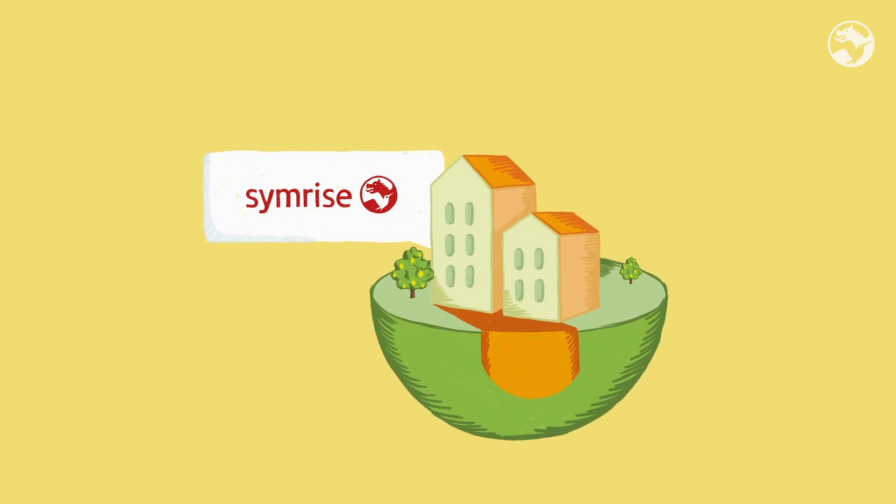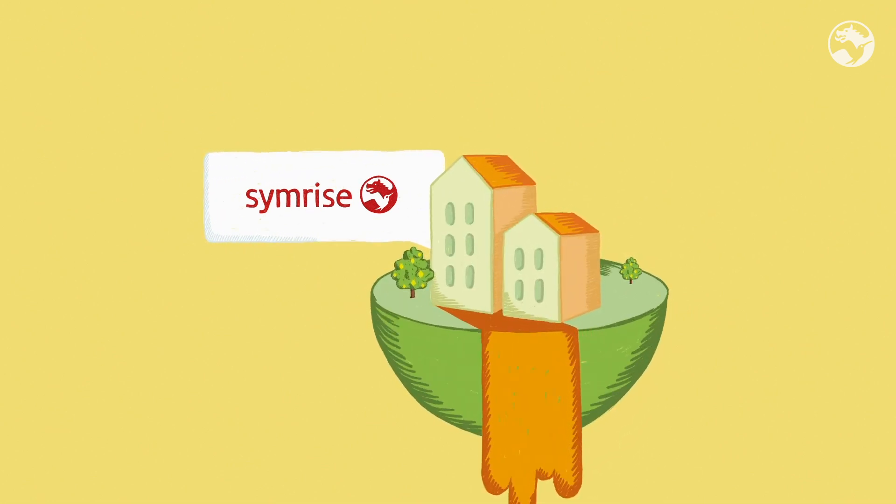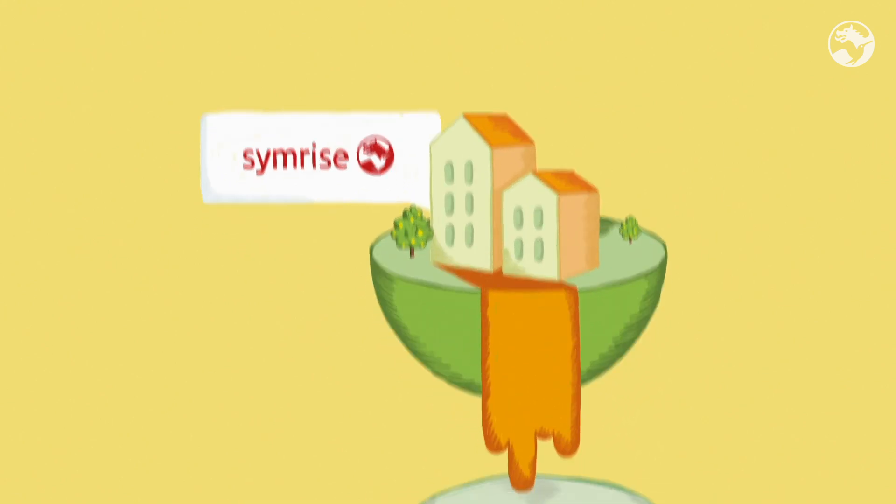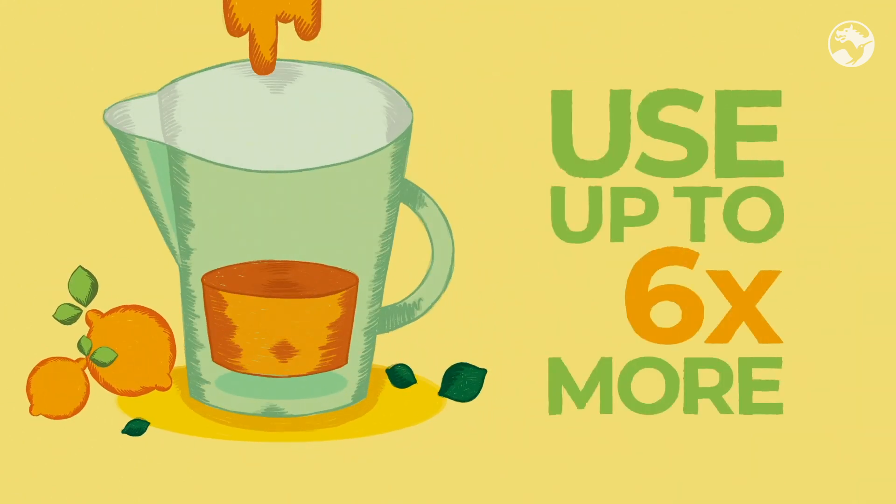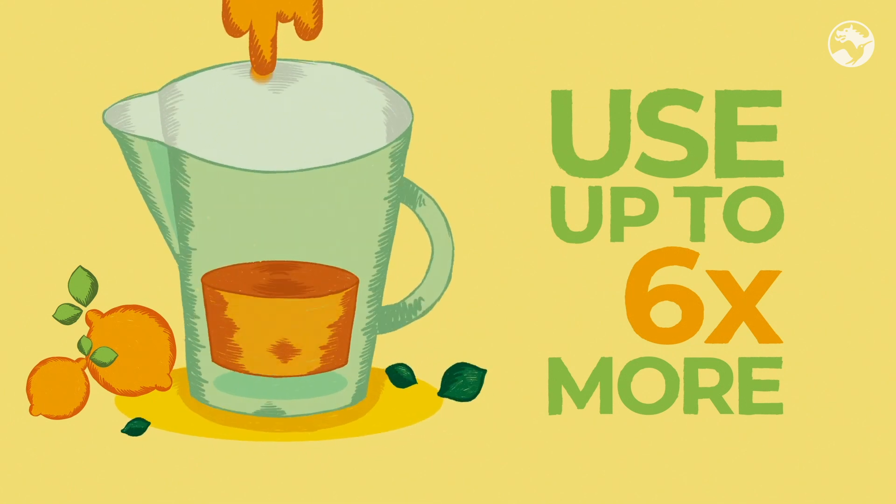Without compensation, juice companies can only use up to 5% HLB juice without having a negative taste impact. With it, they can use up to 6 times as much and still ensure a healthy and delicious juice.